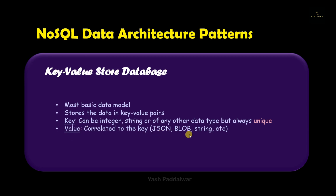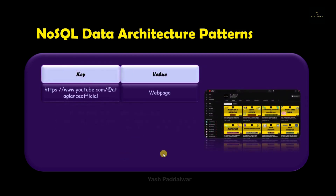Now value is nothing but the data which is correlated to the key. It can be of the form JSON, which is JavaScript Object Notation, or it can be a BLOB, which is a Binary Large Object. It can also be in the form of any other data structure.